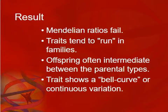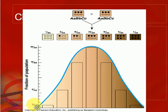The result is we get a range. Mendelian ratios fail completely. Traits definitely run in families because you're inheriting multiple genes. Offspring are often intermediates between parental types — you're not always a blend, but sometimes you are. One dead giveaway that polygenic inheritance is going on is if you plot your traits and there's a bell curve. That almost always indicates polygenic inheritance.